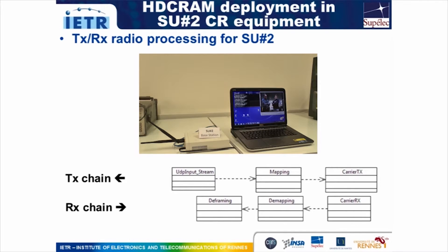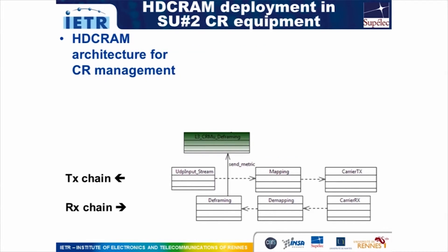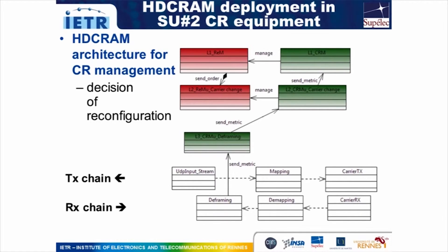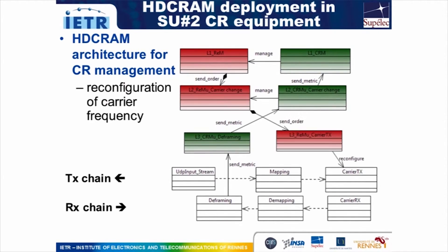Here in white are the operators of the transceiver processing chain of a secondary base station equipment. The deframing operator plays the role of a sensor, and activates its level 3 manager if a frequency jump order is received. This information is transmitted up to the manager responsible for carrier change. The cognitive management side then orders the configuration management side to change frequency, which sends it down towards the carrier TX operator that should be reconfigured.